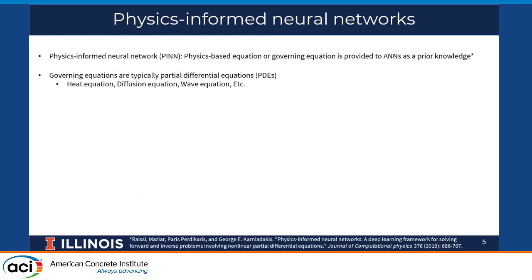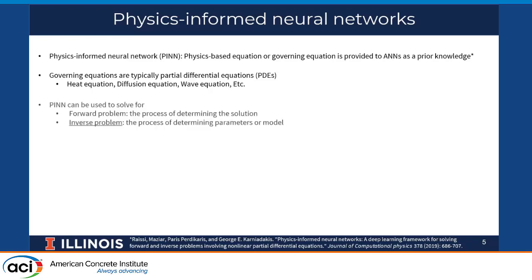A recently developed approach that has gained attention is physics-informed neural networks, PINNs. The main characteristic of PINNs is that a physics-based or governing equation is embedded and given to the neural network as prior knowledge. These physics-based equations are usually in the form of partial differential equations, PDEs — for example, the heat equation, diffusion equation, or wave equation.